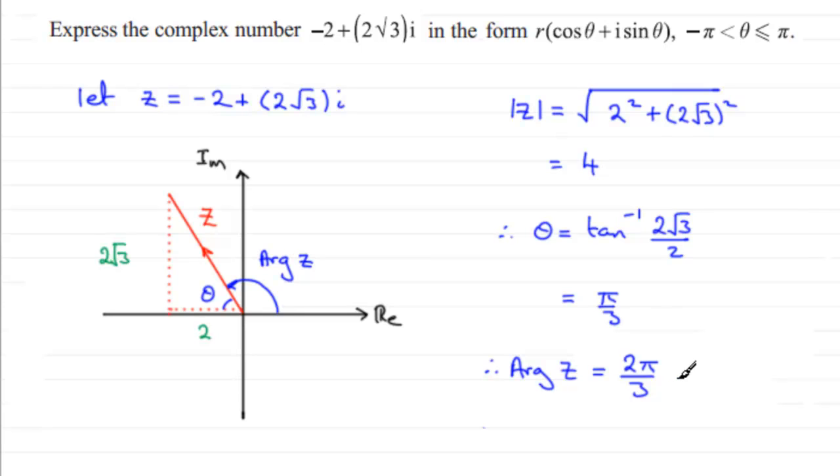So we're now going to put this in the mod arg form. R is the mod and theta is the arg. So therefore we just wind this up, we've got that -2 + 2√3i is equal to the mod which is 4, multiplied by the cos of 2π/3 plus i sine of 2π/3.